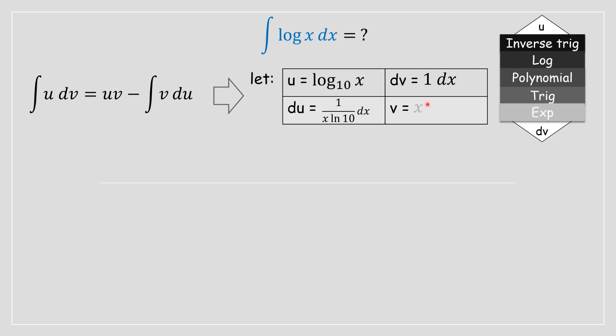On the left hand side you'll be left with v, and on the right hand side you're left with x since the integral of 1 is x. We are then going to take these variables and substitute them back into the integration by parts formula.